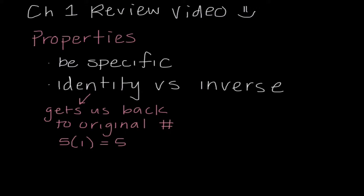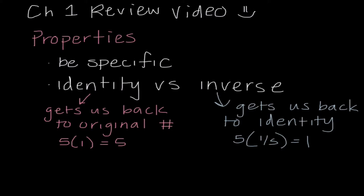The second thing I want to highlight is the difference between the identity versus an inverse. An identity gets us back to the original number. For example, 5 times 1 equals 5 — 5 was our original number, so 1 is the multiplicative identity. What the inverse does is get us back to the identity, like multiplying by something to get back to 1, or adding the opposite value.